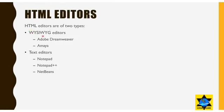HTML editors are of two types: WYSIWYG editors, also known as What You See Is What You Get editors — examples include Adobe Dreamweaver and Amaya — and text editors, such as Notepad, Notepad++, and NetBeans. In WYSIWYG editors it is more of a drag-and-drop approach, while we prefer text editors as they give more control to the programmer and help us learn more code.